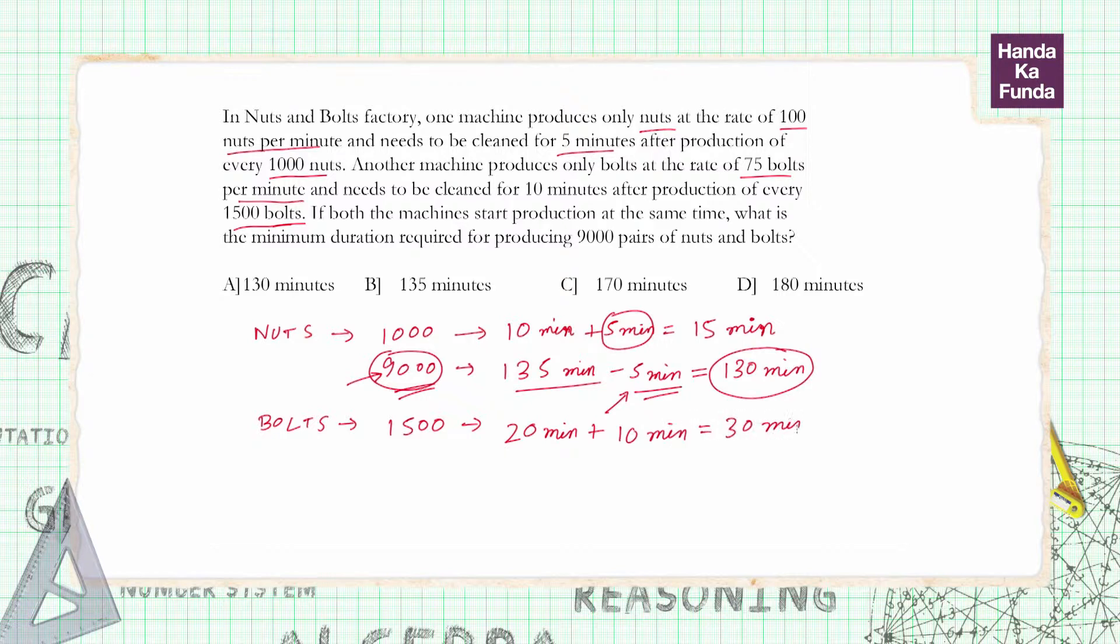For 9000 bolts it will become 6 times or 180 minutes. Once again by the same logic that we removed 5 minutes of cleaning time, we will remove 10 minutes of cleaning time from here, so that means it will take 170 minutes.